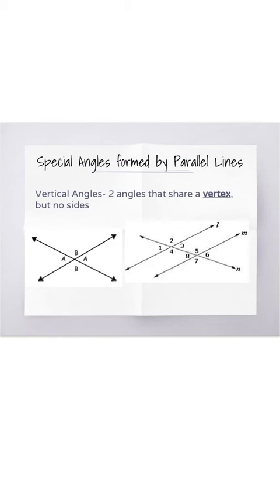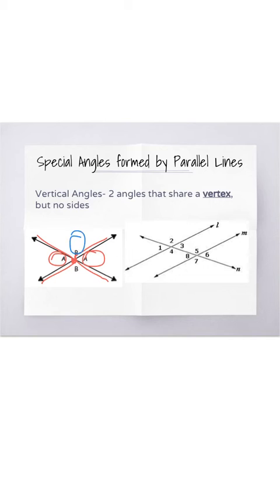Vertical angles we've already talked about, but now we're going to look at some more difficult diagrams that include them. Remember that vertical angles are two angles that share a vertex but no sides. We talked about them forming V's and just having one point that they touch at the vertex, like an Eskimo kiss. In the picture on the left, the A angles are vertical angles, and remember that means they're the same. You also have the B angles on the top and the bottom — they also make that V where they only touch at the vertex, so those are vertical angles.